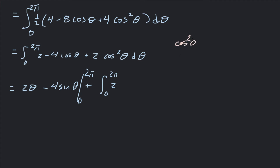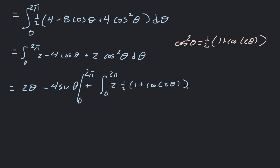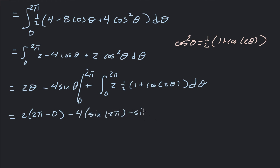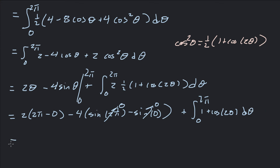To integrate cos²(θ), we use the trig identity: cos²(θ) = ½(1 + cos(2θ)). So 2cos²(θ) becomes 1 + cos(2θ). Plugging in bounds for the earlier terms: 2(2π) - 2(0) = 4π, and -4sin(2π) + 4sin(0) = 0, so those terms give 4π. The remaining integral is from 0 to 2π of (1 + cos(2θ)) dθ.